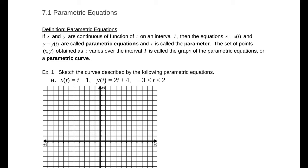If x and y are continuous functions of t on an interval i, then the equations x equals x of t and y equals y of t are called parametric equations, and t is called the parameter. The set of points x, y obtained as t varies over this interval is the graph, or the parametric curve, for these equations.